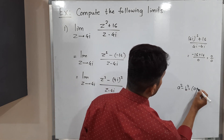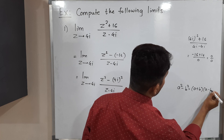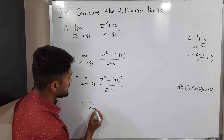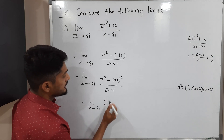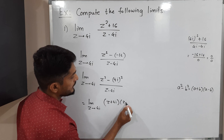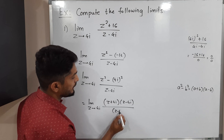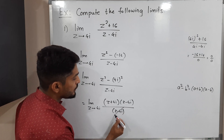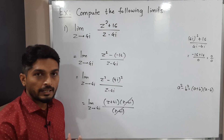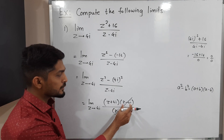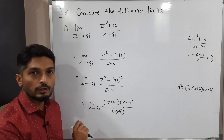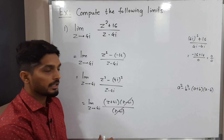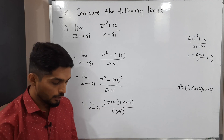We are familiar with the formula a² − b² = (a + b)(a − b). Applying this to the numerator, we get the limit as z tends to 4i of (z + 4i)(z − 4i) / (z − 4i). We can directly cancel (z − 4i) from numerator and denominator. That bracket was what was causing the 0/0 problem — by cancelling it, we eliminate the indeterminate form.